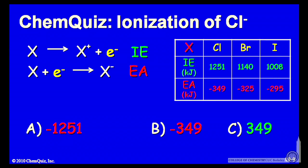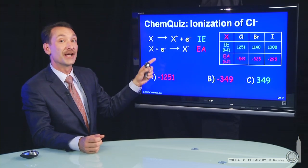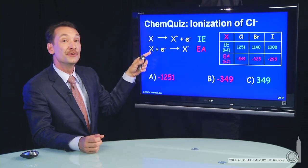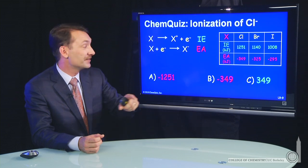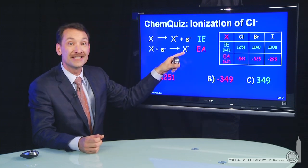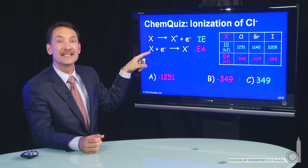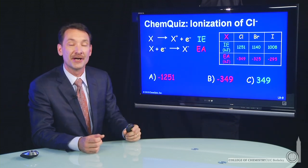Now we have a table of ionization energies and electron affinities. And if you look carefully at this electron affinity reaction, a negative species going to the electron and the neutral species, that's exactly the reaction we're looking for. That is, we're trying to ionize Cl minus - take Cl minus to an electron and Cl. So it's the reverse of the electron affinity reaction.